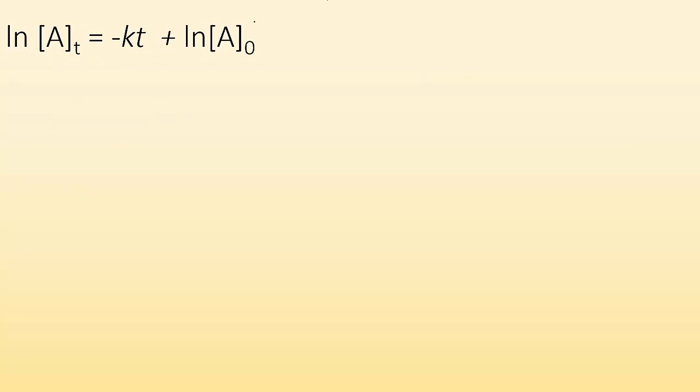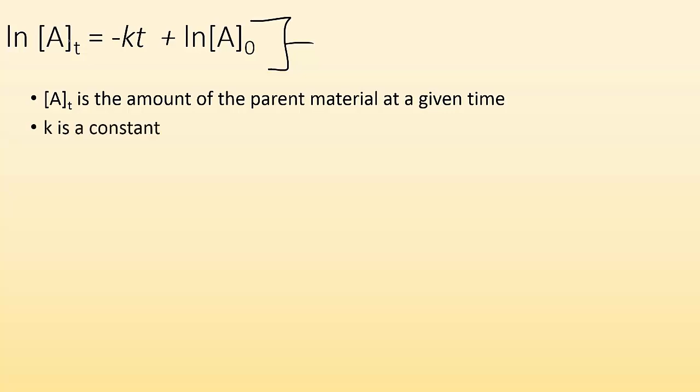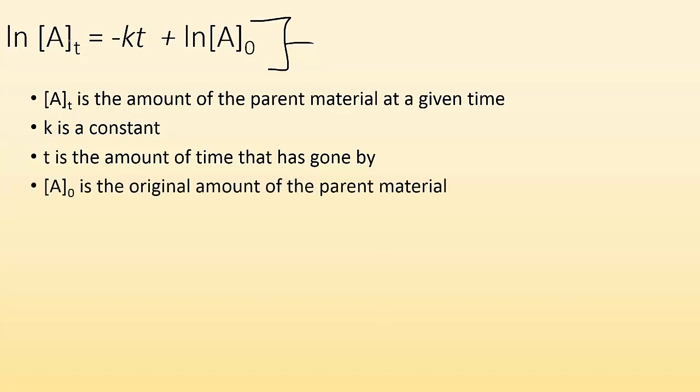So this is the equation. This is the first-order rate law. We got ln of At equals negative Kt plus ln of A0, where At is the amount of parent material at a given time, K is a constant, T is the amount of time that has gone by, and A0 is the original amount of parent material. How much did you start?